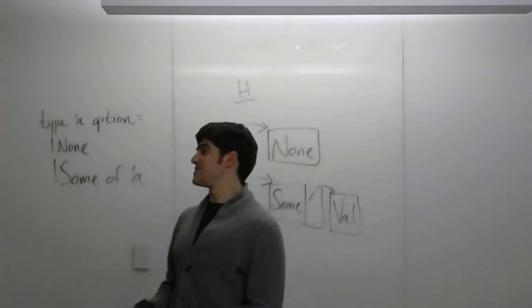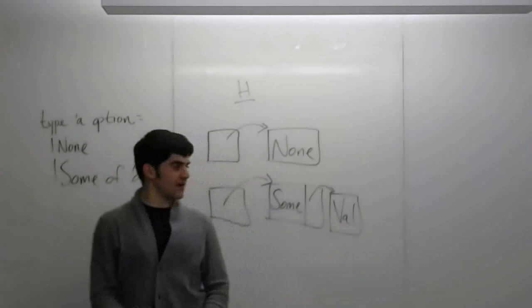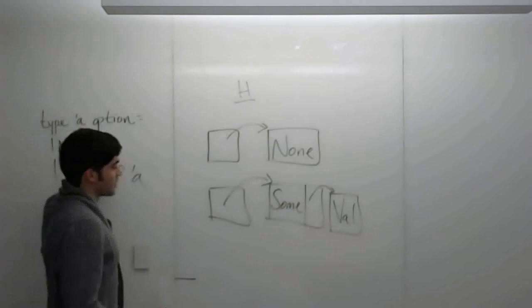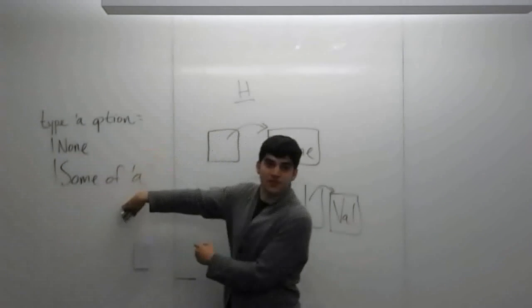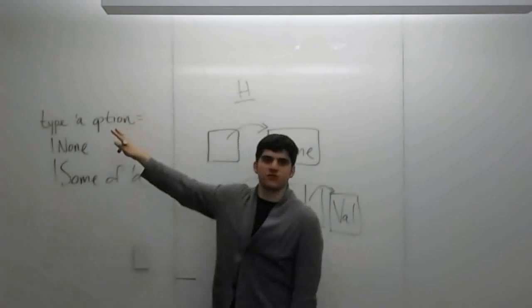So let's remember this type tick A option. Remember, an option is a non-permitted data type and it can be two things. It could be nothing, or it could be something. It could either be none or some tick A. These are the two constructors for the type option.